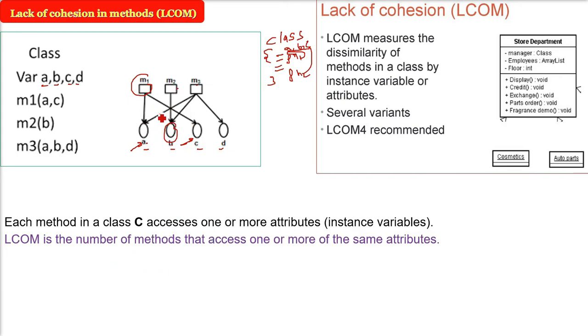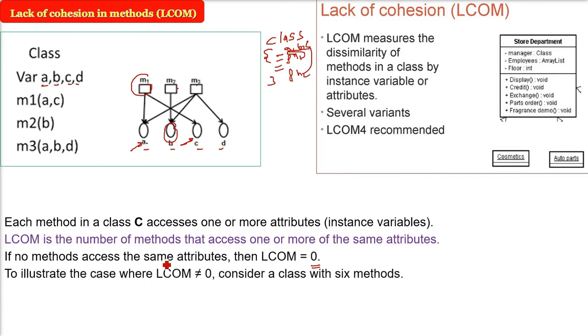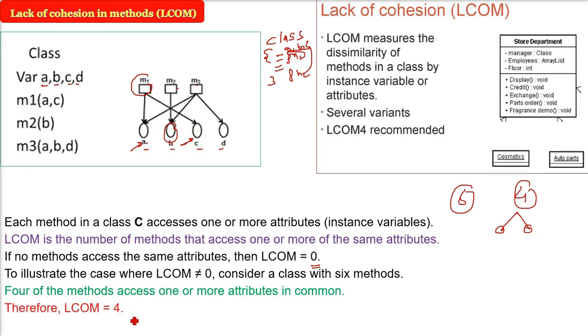So normally we talk about cohesion, but here we are talking about lack of cohesion. If no method accesses the same attribute, you are bound to have LCOM value as zero. In order to illustrate to understand the case where LCOM not equals zero, you just consider six methods. Four of the methods access one or more attributes in common. What do we say? We say LCOM is equal to 4. The lack of cohesion in methods is 4. So this is how the LCOM works. LCOM is high, the complexity of the class design is higher.